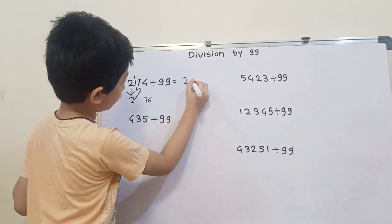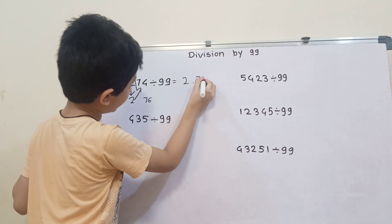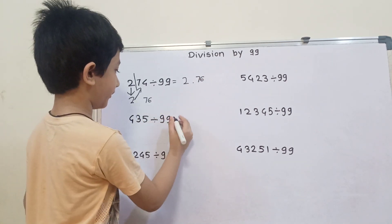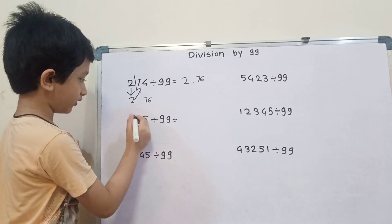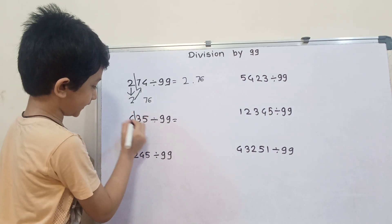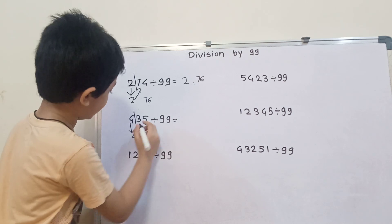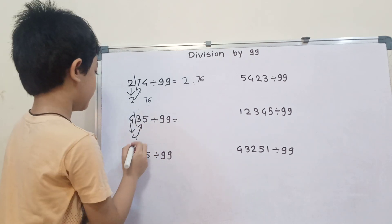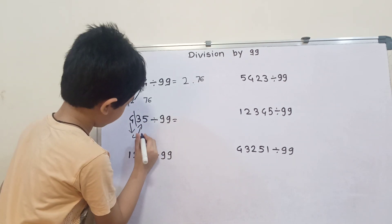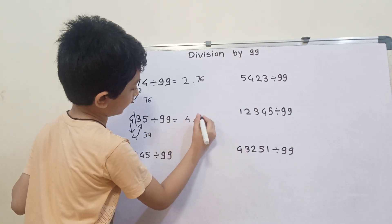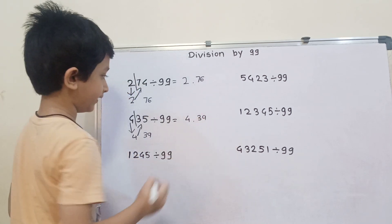Then 435 divided by 99. Again, 2 digits divided by 99. Write 4 as it is, then 35 plus 4 equals 39. So the answer is 4.39.